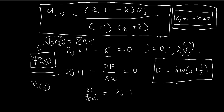In the last video, we found out that in order to come up with a normalizable solution, we would have to require the recursion formula to stop at some point. We can stop it by allowing 2j plus 1 minus k to equal 0. If we choose integer n as the stopping point, then k is going to be equal to 2n plus 1.